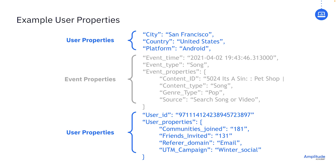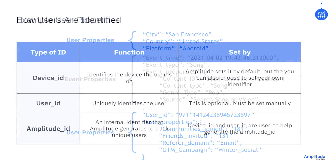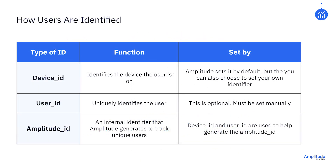You can also see a random string of numbers called user ID. Identifying users is important, and there are three critical identifiers available. Device ID identifies the device the user is on — Amplitude sets this by default, but you can also choose to set your own identifier. User ID is an optional setting to uniquely identify a user; it can never change, so we don't recommend setting it to a username or email, which a user could change. Device ID and User ID are used to help generate the Amplitude ID, which is an internal identifier that helps track unique users. This is Amplitude's way of counting unique users and ensuring your data is as accurate as it can be.